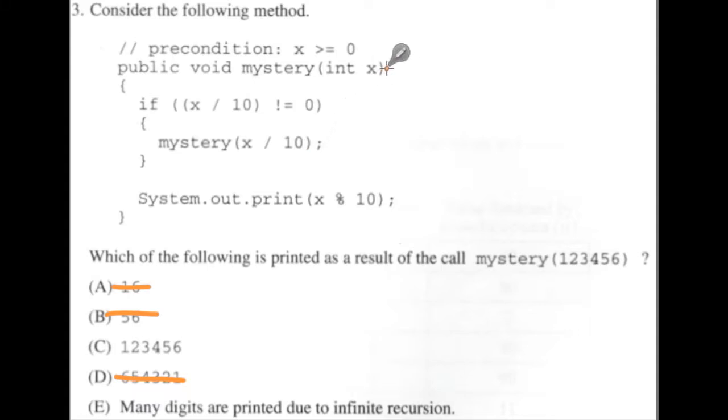So now x will be equal to 1. x div 10, there are no 10s, right? So it doesn't print, this is actually true, right, because 1 div 10 is 0, so it's equal to 0, so it stops the recursive call, doesn't do a recursive call.